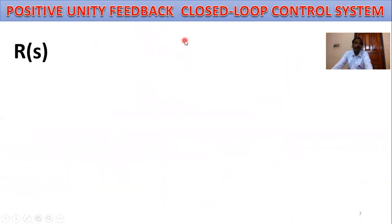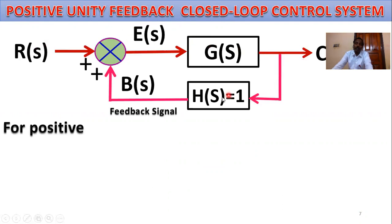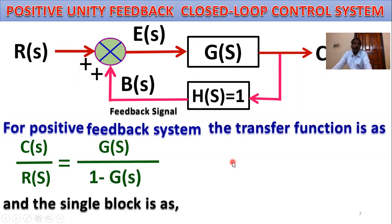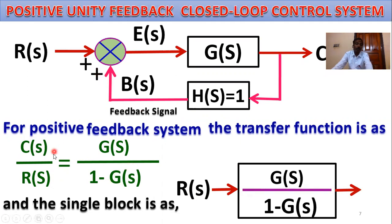For positive unity feedback closed loop systems, the feedback path is positive and H of S equals one, with B of S as the primary feedback signal. The transfer function for a positive unity feedback system is C of S by R of S equals G of S by one minus G of S, where one minus G of S is the characteristics equation. The equivalent single block diagram has input R of S, gain G of S by one minus G of S, and output C of S.